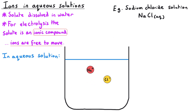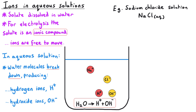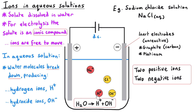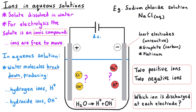In an aqueous solution, the water molecules themselves break down, producing hydrogen ions (H+) and hydroxide ions (OH−). When you carry out electrolysis on an aqueous solution by connecting electrodes to a DC power supply, this creates an issue: there are two positive ions both attracted to the negative electrode, and two negative ions both attracted to the positive electrode, but only one of each type of ion gets discharged. This raises the important question: which ion gets discharged at each electrode?